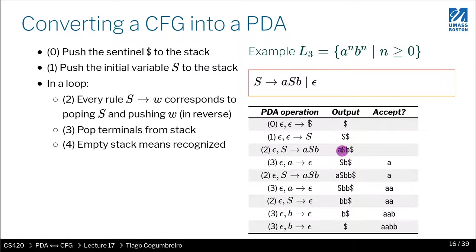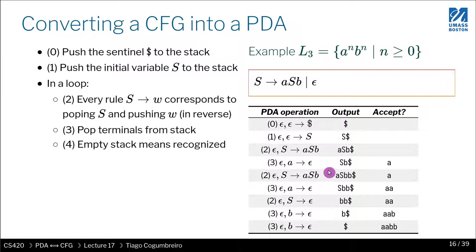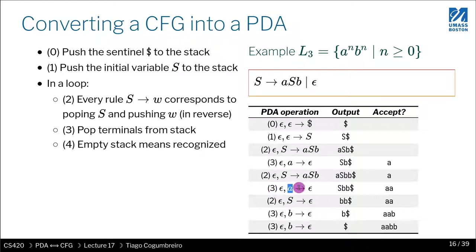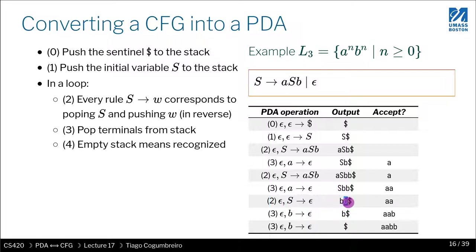Now A is on top. Since A is a terminal, we pop it and consume input A. Now S is on top again. Non-deterministically we choose the first rule again, pushing A, S, B — so the stack now has A, S, B, B. A is on top, so we pop it and read the second A from input. Now S is on top again; this time we choose the epsilon rule, so we simply pop S.